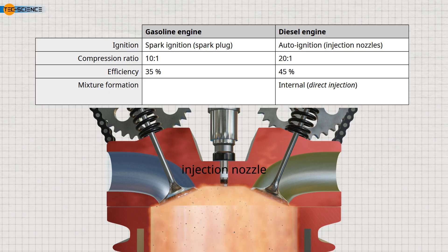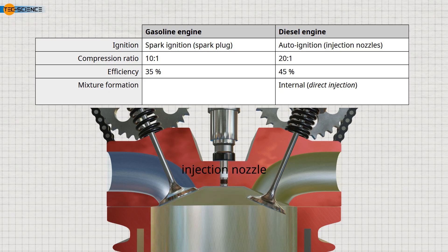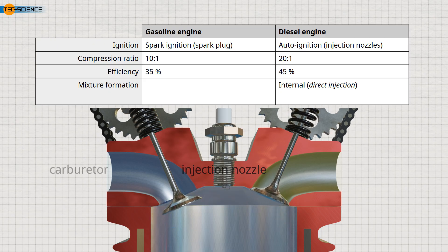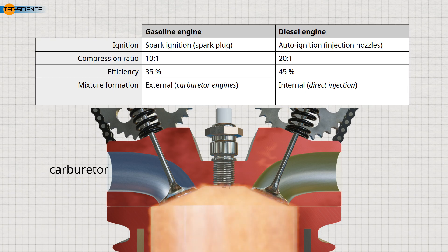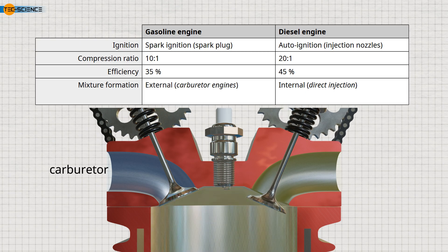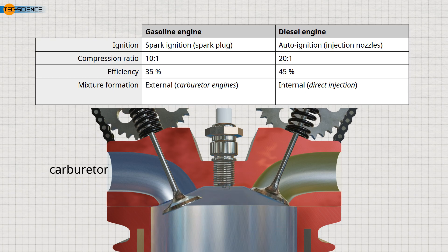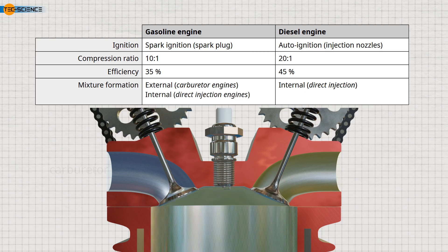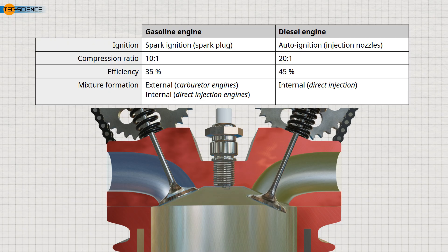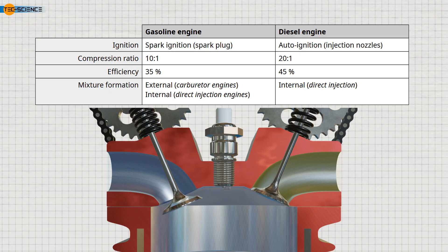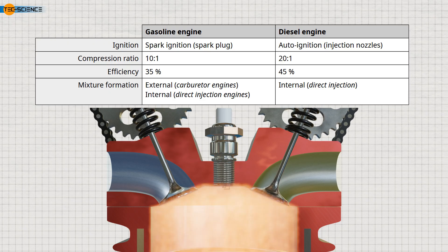In gasoline engines, the combustible mixture can be prepared externally in a carburetor and then fed into the engine cylinder, or internally in the case of direct-injection gasoline engines, where the mixture is made combustible only inside the cylinder.